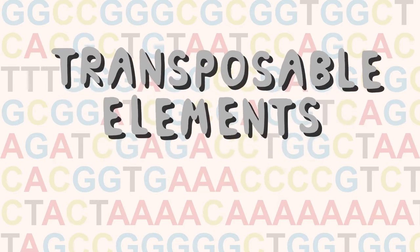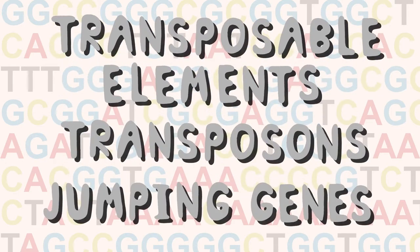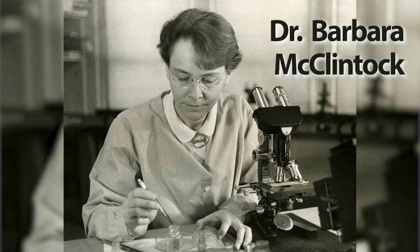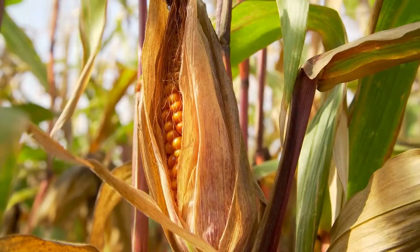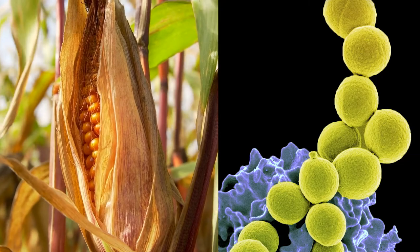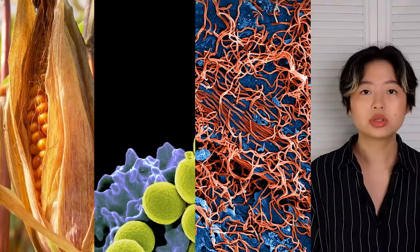Transposable elements, or transposons, or jumping genes as the cool kids say, are sections of DNA that can actually move around on their own in the genome. They were first discovered by Dr. Barbara McClintock in maize all the way back in the 1940s. She found that a portion of the maize chromosome was able to break off and reintegrate into another part of the chromosome, called a mutable locus. Since then, we've found a ton of these mutable loci not only in corn, but also in bacteria, viruses, and ourselves — humans.